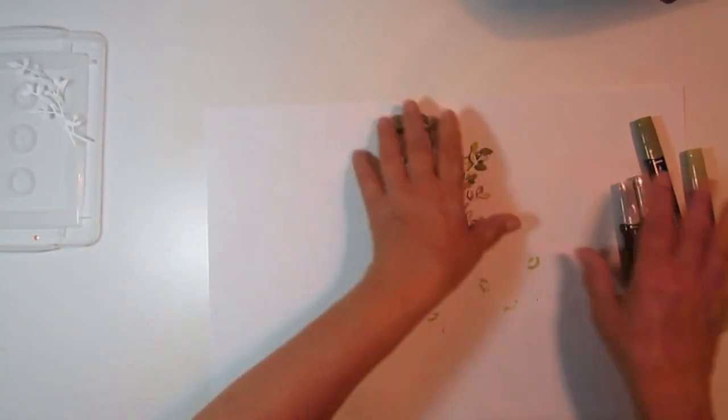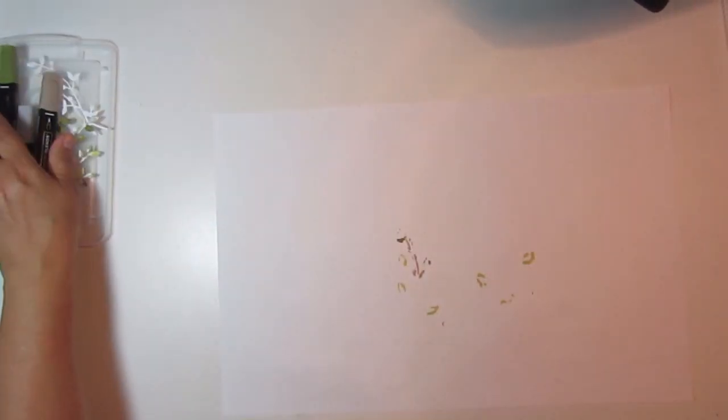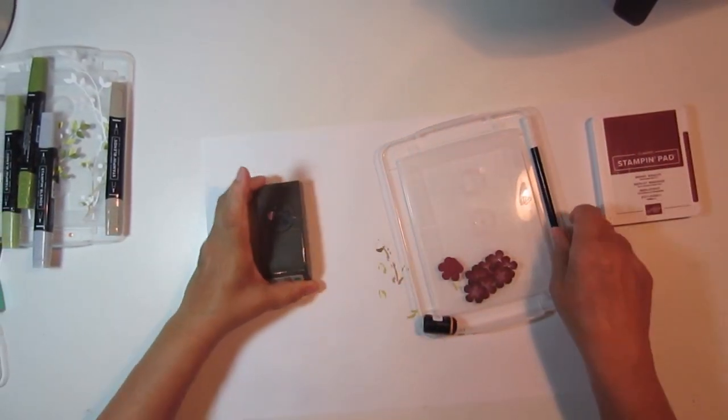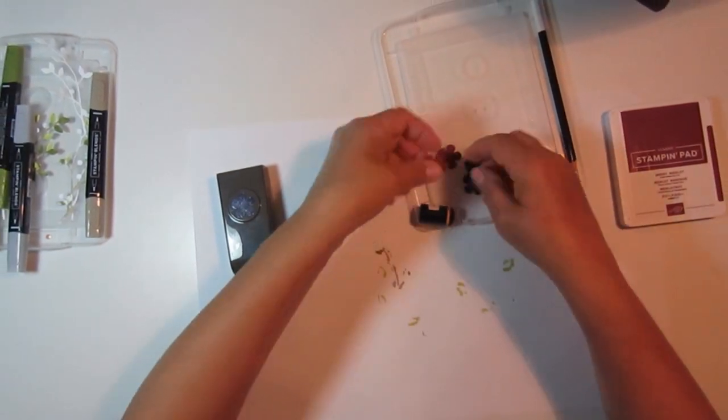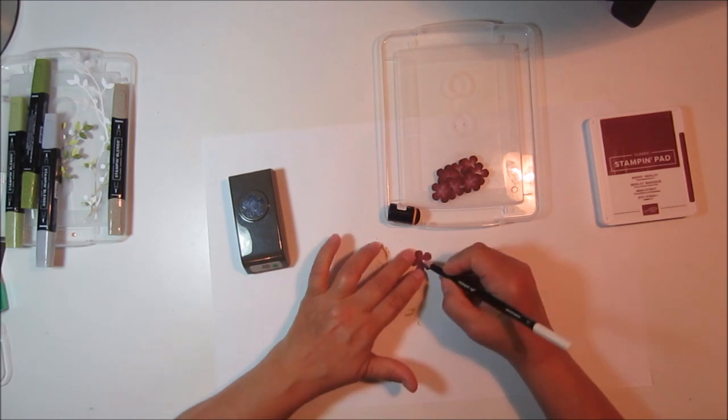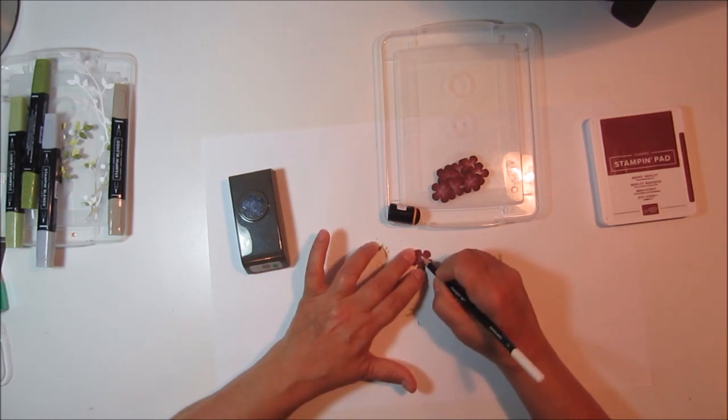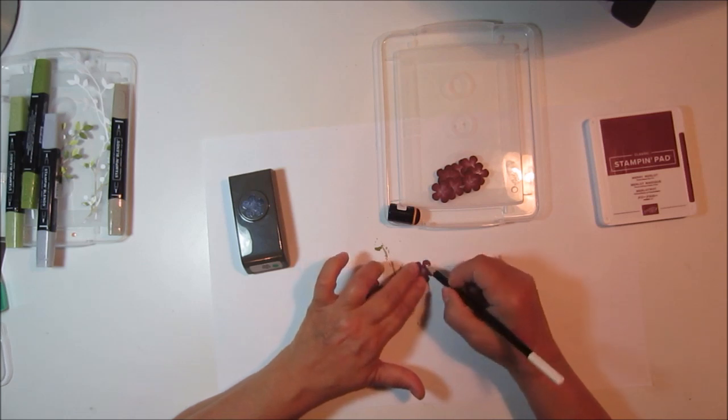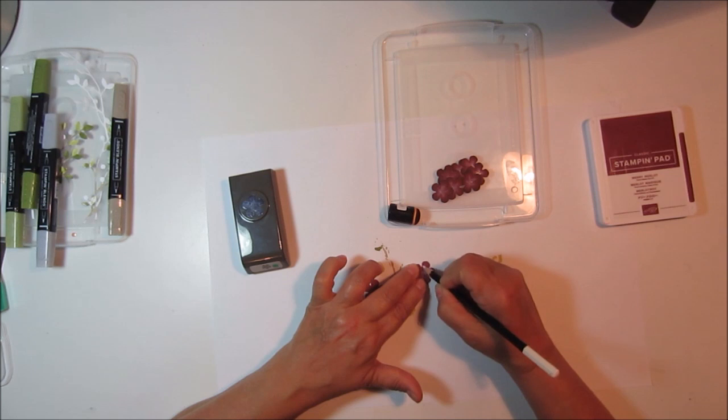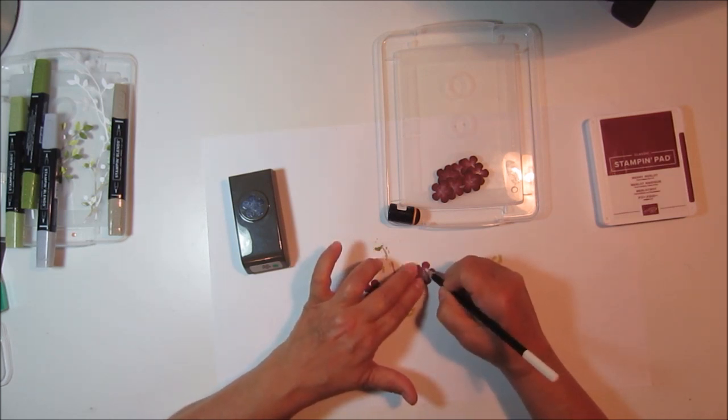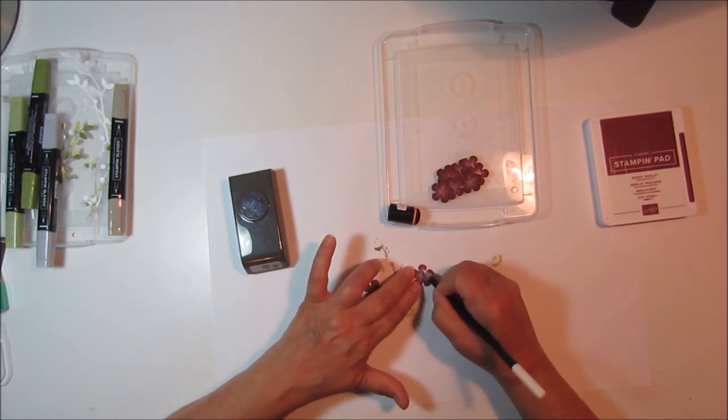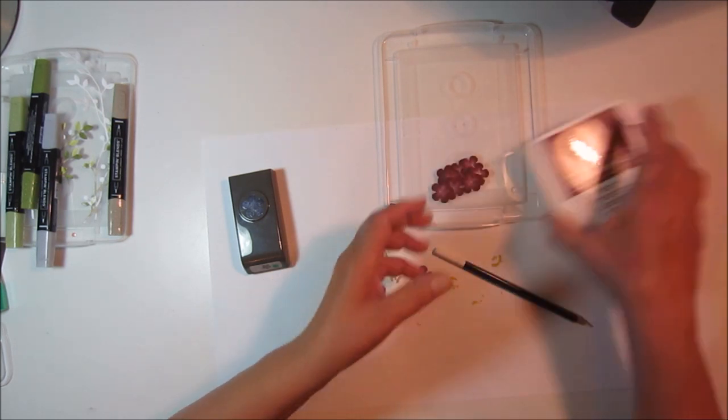And then for the flowers I used the Blossoms punch. What I did after I punched out my flowers, I used my watercolor pencil, the white one, and just kind of did like a little thing in the middle and then I went up a little more on each petal. The reason I did that is because I liked how it looked when I sponged it.